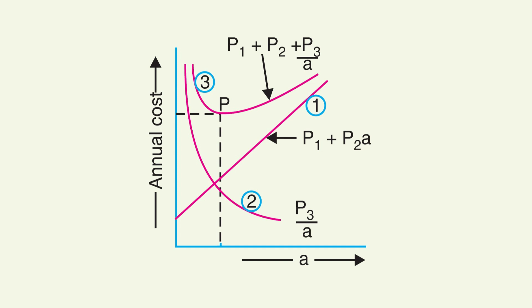To visualize this better, imagine a graph where the x-axis is the cross-sectional area A and the y-axis is the annual cost. The first curve is a straight line that represents P1 plus P2A, which increases with area. The second curve is a rectangular hyperbola, which represents P3 divided by A, decreasing as area increases.